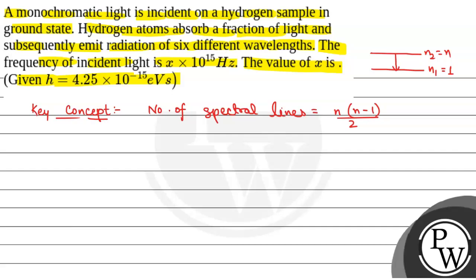We have been given that radiation of six different wavelengths are emitted, that is, the number of spectral lines is equal to 6, and the hydrogen sample is in ground state, so n1 is equal to 1. Applying the formula: n(n minus 1) is equal to 12, or n squared minus n minus 12 is equal to 0.